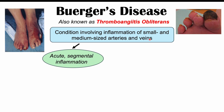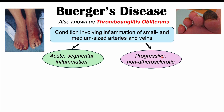With regards to this particular type of vasculitis, meaning an inflammation of blood vessels, this particular type of vasculitis is going to be acute and segmental. So it's going to have segments of the blood vessels that are inflamed, and it's going to be progressive, worsening and increasing in severity over time. It's also going to be non-atherosclerotic — it doesn't have atherosclerotic plaques like we would see in atherosclerosis.